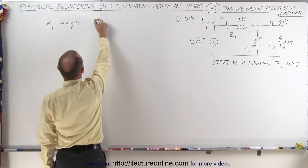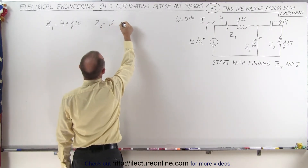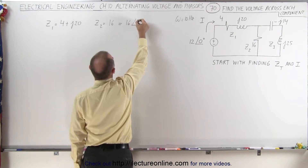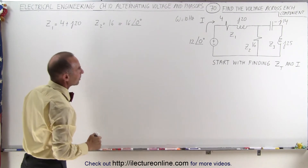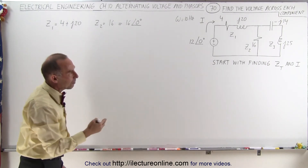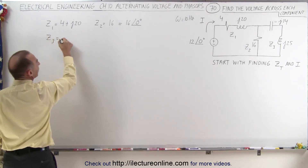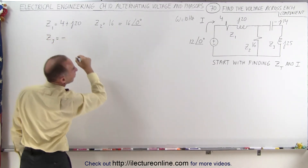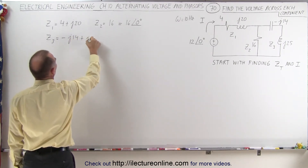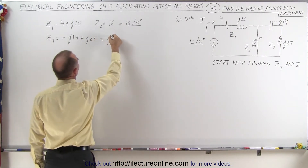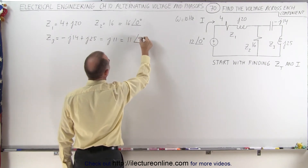Next, we're going to find Z2. That's fairly straightforward. Z2 is going to be equal to only a real part of 16 ohms, which can also be written as 16 with a phase angle of 0 degrees. And then Z3 is the sum of the capacitor reactance and the inductive reactance: Z3 = -j14 + j25, which equals +j11, or a magnitude of 11 with a phase angle of +90 degrees.